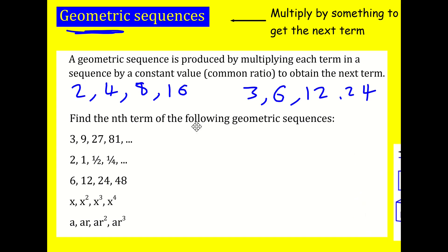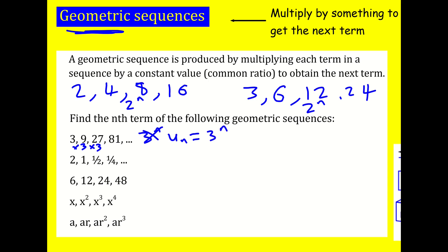We know what a geometric sequence is. How can we find the nth term? For the sequence multiplying by 3 every time, I can see this is going to be 3 to the power n. So I can write that u_n is equal to 3 to the power n. That's my nth term.